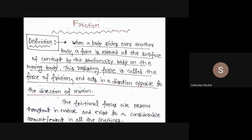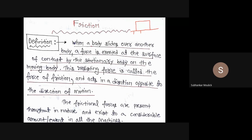So far, in the previous module, we assumed that if a body is placed on a surface and you are moving it by some applied force P, the body will move. But I assumed that the contact point between the body and the surface is smooth — that is, an ideal surface with no roughness. But practically, is that condition possible? Practically, will the surface be ideal or rough?